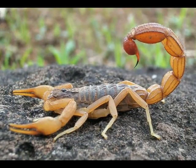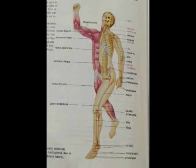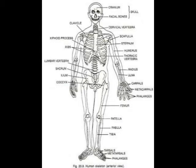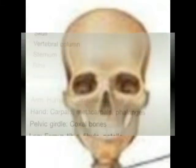The third type is Endoskeleton. Endo means inner side. An endoskeleton is an internal skeleton present in human beings. The human skeleton is divided into two portions: Axial and Appendicular. The Axial skeleton means the central part of the body, and it contains 80 bones.